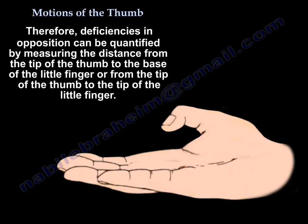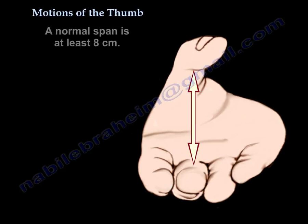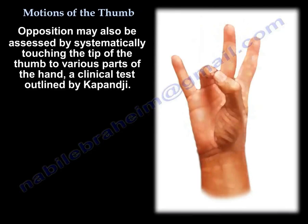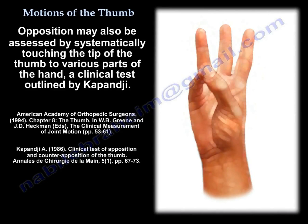Deficiencies in opposition can be quantified by measuring the distance from the tip of the thumb to the base of the little finger, or from the tip of the thumb to the tip of the little finger. Alternatively, the degree of opposition may be determined by measuring from the flexor crease of the interphalangeal joint to the distal palmar crease over the third metacarpal; a normal span is at least eight centimeters. Opposition may also be assessed by systematically touching the tip of the thumb to various parts of the hand, a clinical test outlined by Kapanji.